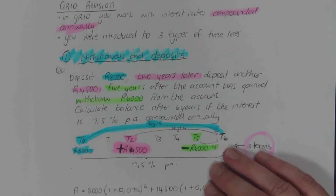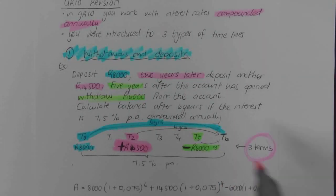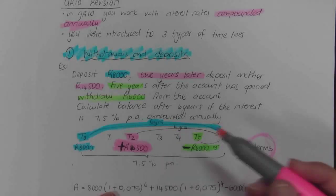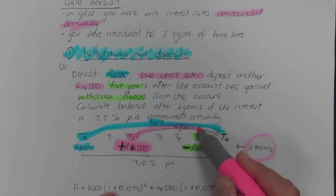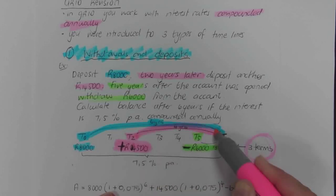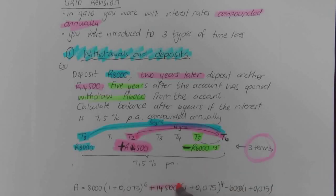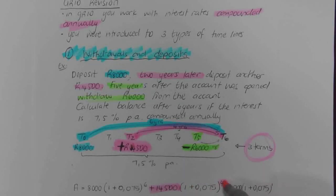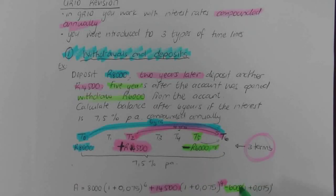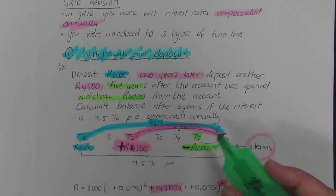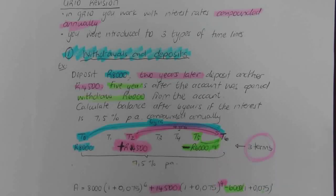When I look at my second investment — the second deposit made in year two — R14,500 was part of this for four years. So R14,500 was part of it for four years at seven and a half percent. Now when I look at the withdrawal that happened in the fifth year, it was at seven and a half percent but it was only affecting this for one year.